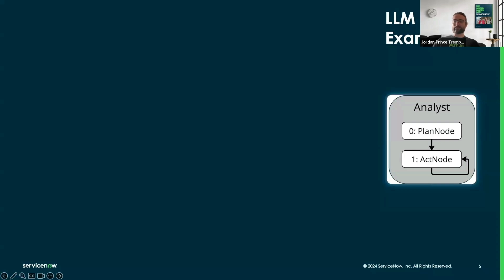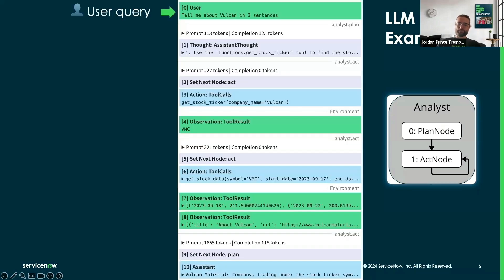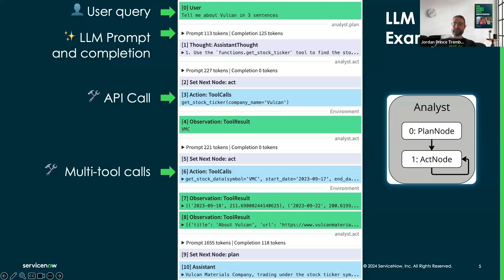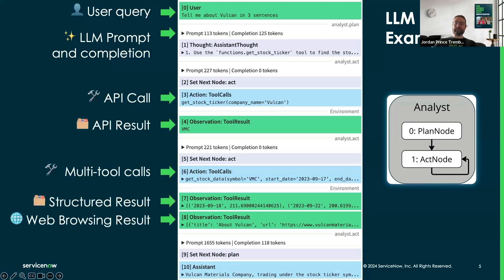Here's a simple example of an LLM agent helping with financial information. There's one agent with two nodes: one for planning and one for acting. The user asks for information about a company named Vulkan. The agent calls LLMs, calls different APIs, gets structured and web browsing results, and answers back to the user.